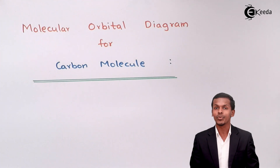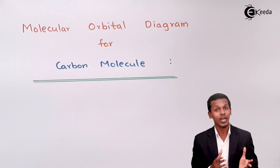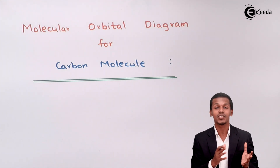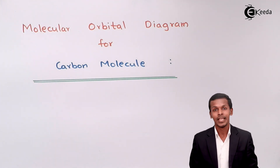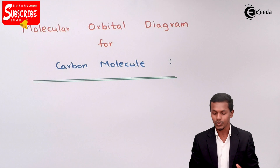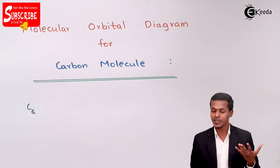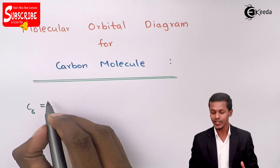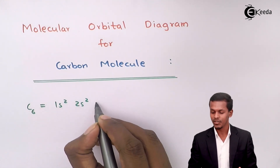Talking about the carbon molecule, it is basically made up of two carbon atoms, and that involves the mixing of the two atomic orbitals of carbon, which leads to the formation of molecular orbitals. Before understanding that, we should know the electronic configuration for the carbon atom. The atomic number of carbon is 6, so we write it as 1s2, 2s2, and 2p2.